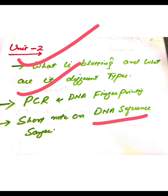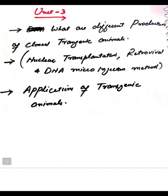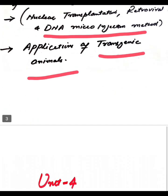Unit 3rd: The most important questions include what are different production of cloned transgenic animals, mainly nuclear transplantation, retroviral and DNA microinjection method. Question number third: what are applications of transgenic animals.